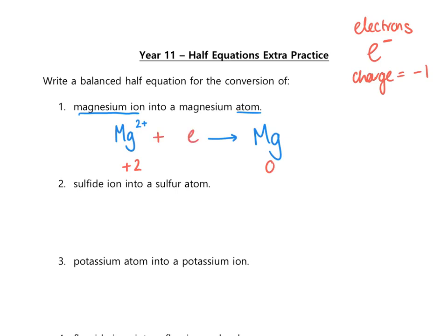The left hand side is plus 2 and needs to come down to 0, so we add electrons to the left. Be careful not to change the charge of the electrons — some people write e²⁻, but electrons do not have a charge of minus 2. Keep them as e⁻ and think about how many you need. The left hand side needs to come down by 2, so add two electrons. That gives plus 2 from the Mg²⁺ and minus 2 from the two electrons — an overall charge of 0. That is now a balanced half equation.